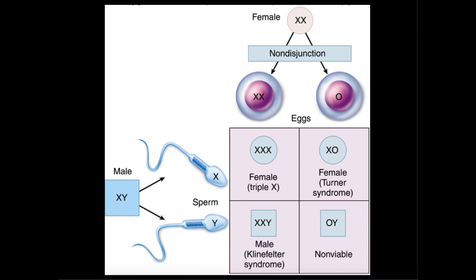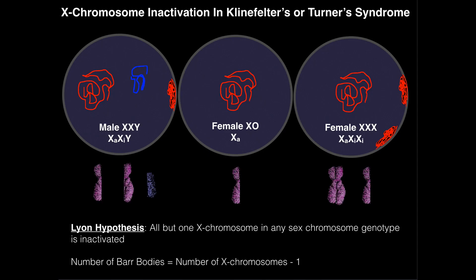One more thing: these non-disjunction events are not heritable. As far as anyone knows, they're just random accidents that happen during meiosis — there's no way to genetically predict this based on probability. Hopefully this video gave you a good understanding of the processes that lead to these three syndromes, their genotypes, and the Barr bodies present in each case. Please make sure to like this video and subscribe to my channel. Thank you very much.